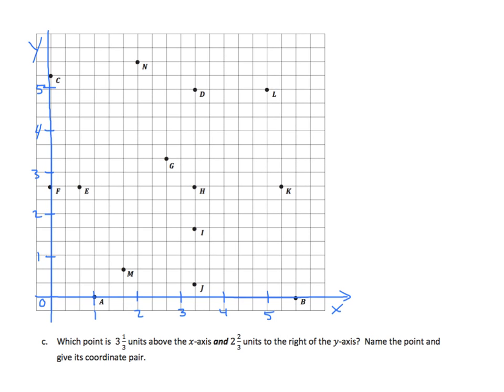Task 2c says, which point is 3 and 1-third units above the x-axis and 2 and 2-thirds units to the right of the y-axis? Name the point and give the coordinate pair. We're mixing things up a little bit, and we should be starting to notice a pattern. I need 3 and 1-third above the x-axis. As we go up, it's not the x that changes, it's the y. So, 3 and 1-third.